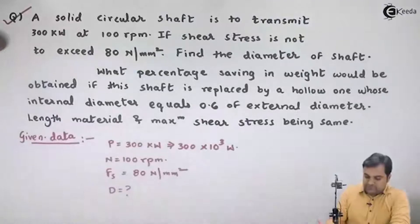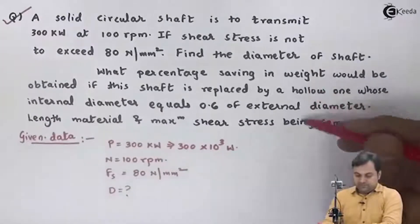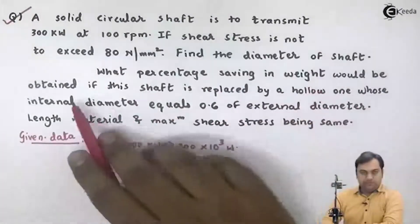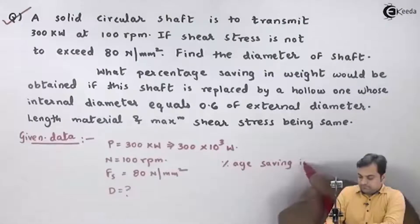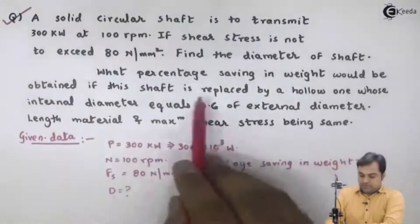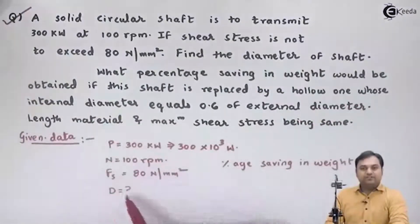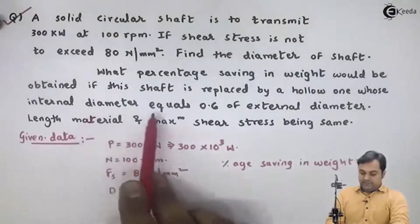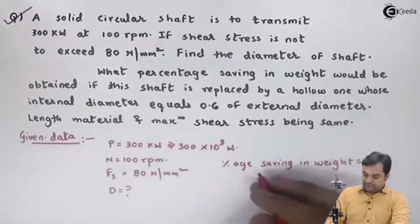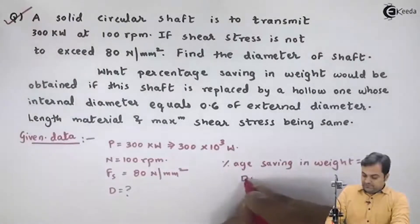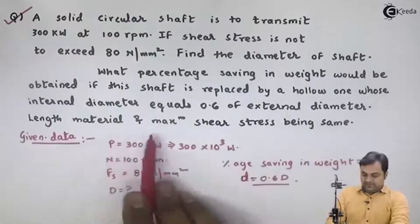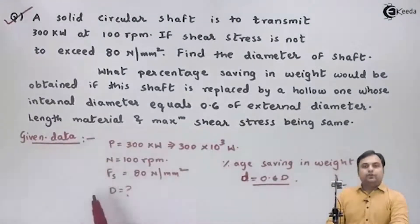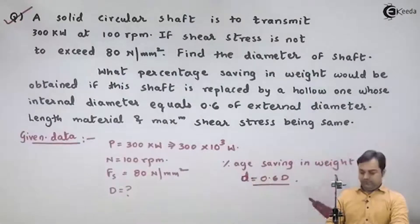At first we have to calculate the diameter of the solid shaft. The next part of the problem relates to the hollow shaft — what percentage saving in weight would be obtained if the solid shaft is replaced by a hollow one. The internal diameter equals 0.6 times the external diameter. Length, material, and maximum shear stress are the same for both shafts.